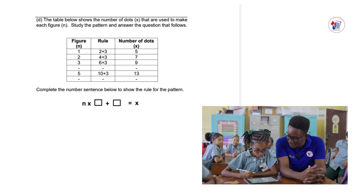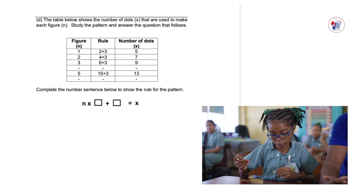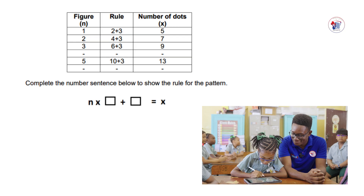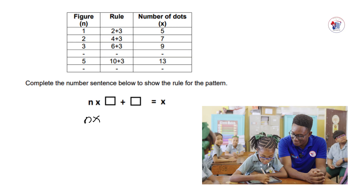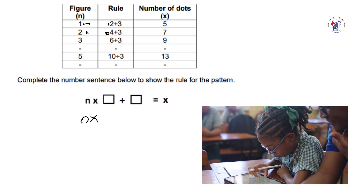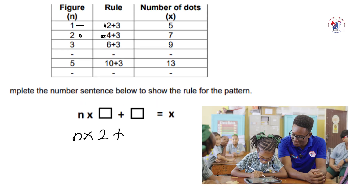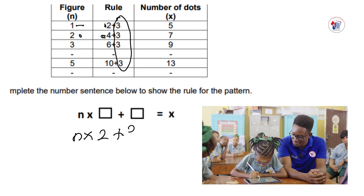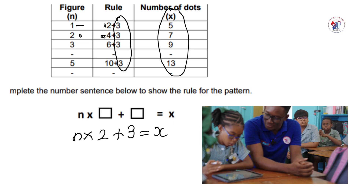Complete the number sequence below to show the rule for the patterns. We have n times something plus something equals x. So we can see that there's 1 and a 2, a 2 there and a 4, so they're multiplying by 2. And now they're asking us what are we adding to n times 2? We can see in the column that says rule, they're adding 3, which equals x. And x is the answer, which we get by the number of dots.